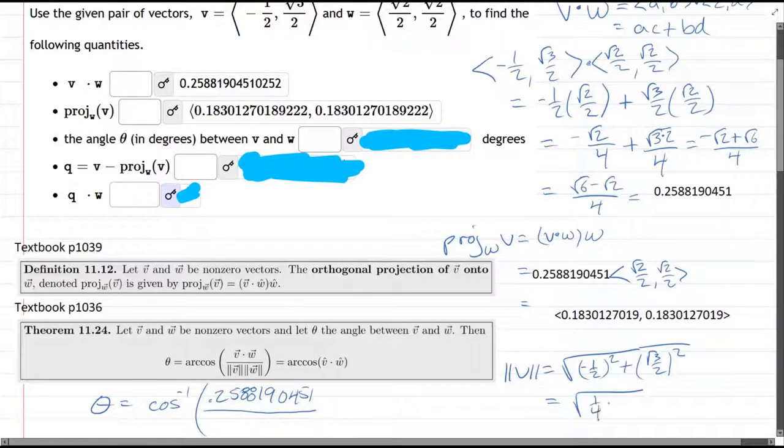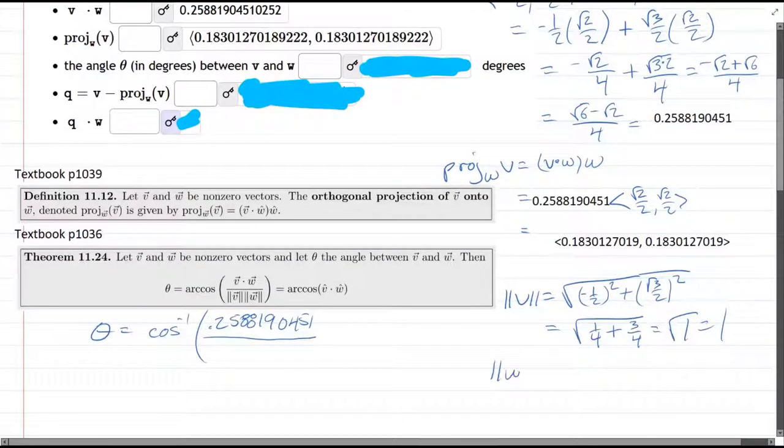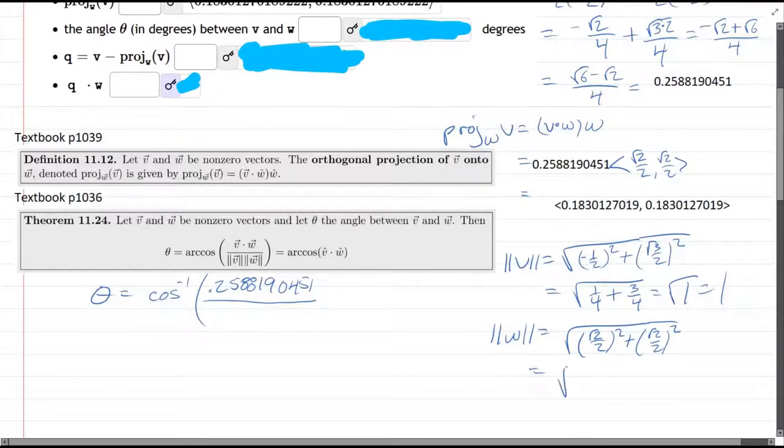That's going to be the square root of negative one-half squared plus square root three over two squared. So one-half squared is one-fourth plus square root three squared is regular three over four. So that is square root one, which is one. Magnitude of w is similar. That was square root two over two squared plus square root two over two squared. Square root two squared is regular two over four plus the same thing. Square root one is one. Divided by one times one. So really all we need is cosine inverse of that number.